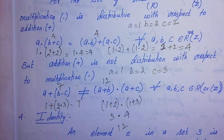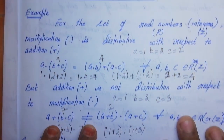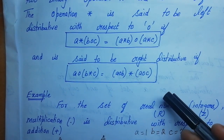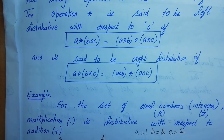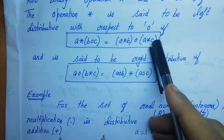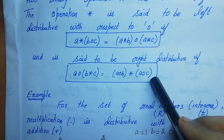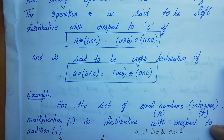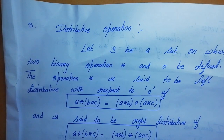So multiplication is distributive with respect to addition, but the vice versa is not — addition with respect to multiplication is not a distributive binary operator. We call a binary operator distributive when either the left or right distributive condition is satisfied for every a, b, c.